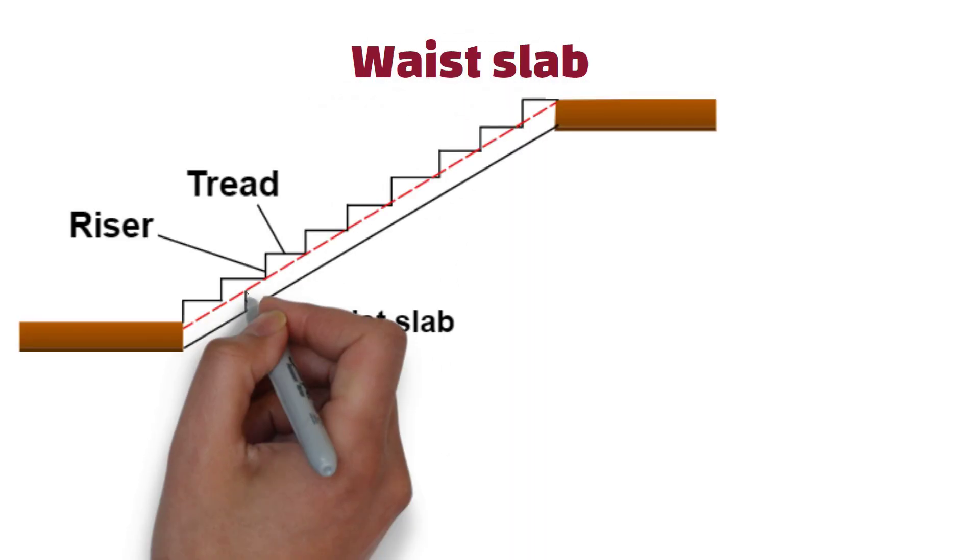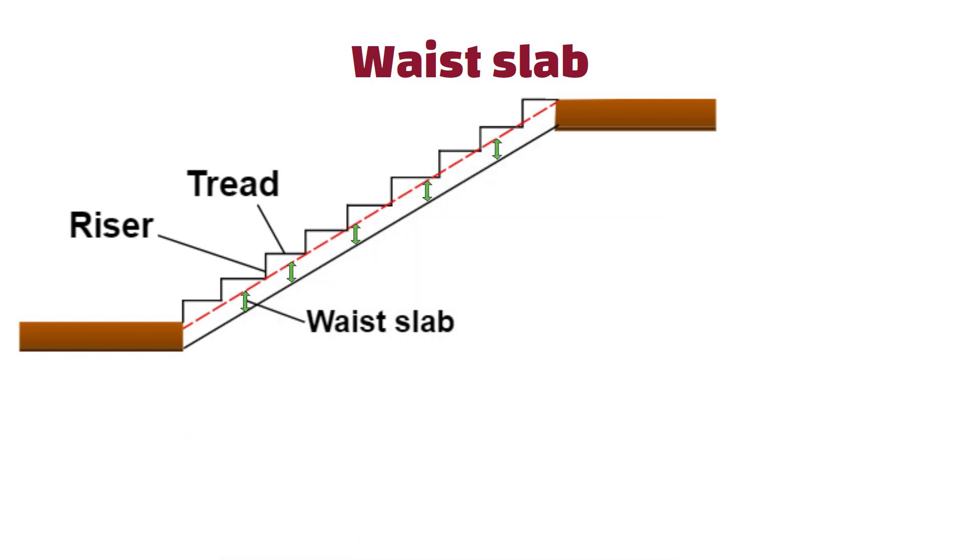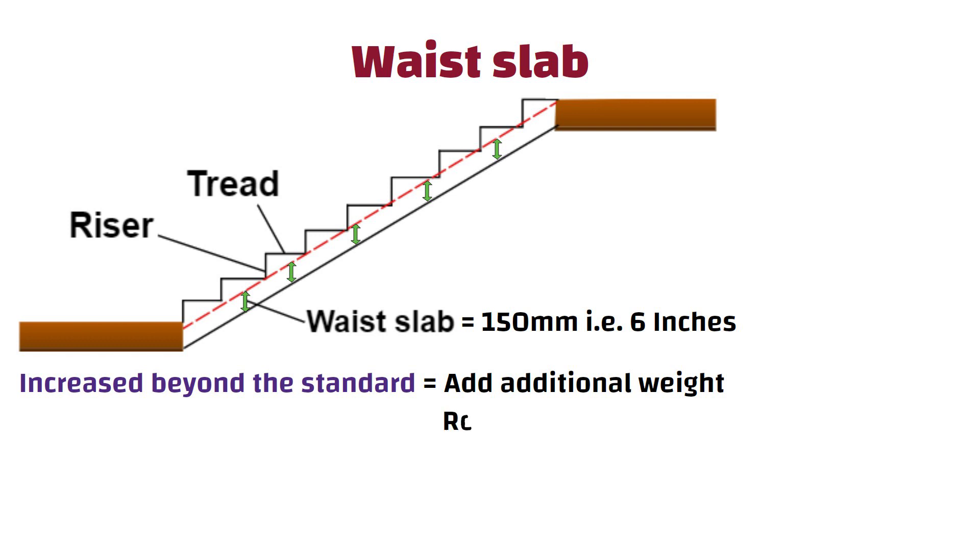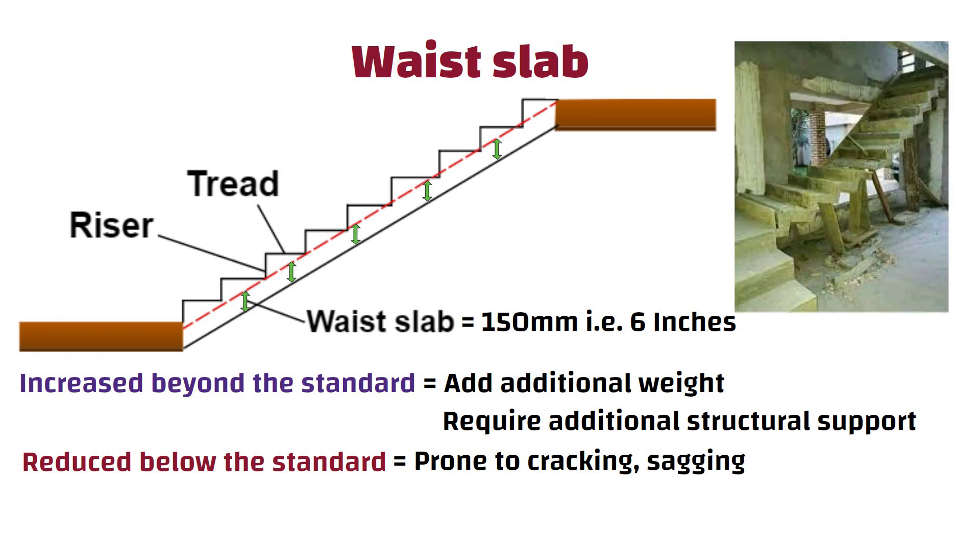9. Waist Slab. Waist slab refers to the horizontal slab that connects and supports the treads and risers of the staircase. The waist slab thickness is typically around 150 mm, i.e. 6 inches. If the thickness of waist slab is increased beyond the standard, it will add additional weight to the staircase and may require additional structural support. Conversely, if the thickness is reduced below the standard, the staircase may be more prone to cracking, sagging or other forms of structural failure.